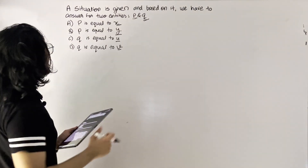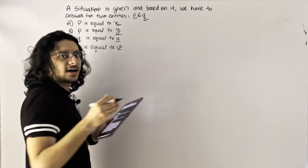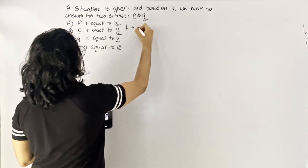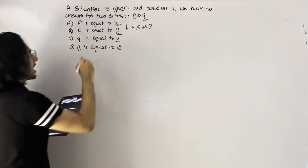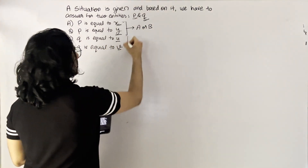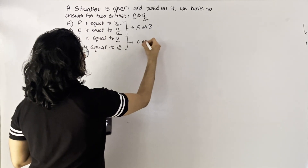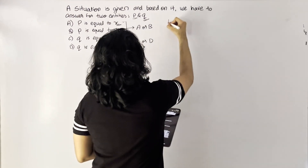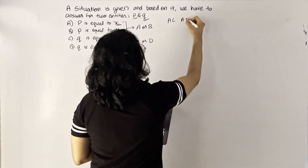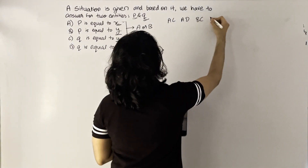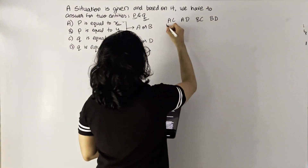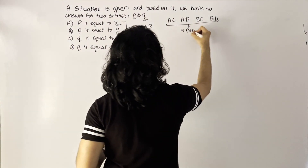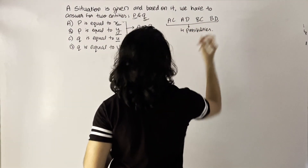A normal student will think there is a possibility of getting one among A or B for P, and one among C or D for Q. So the possible combinations of an answer will be: A and C, A and D, B and C, or B and D. There are four possibilities.